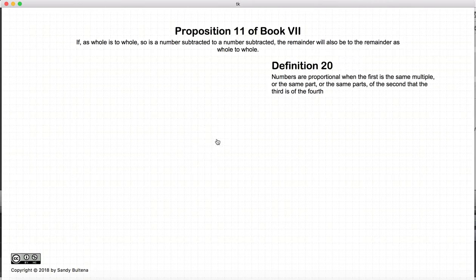Now before we begin, we need to recognize what the definition of proportional is. If you recall from Book 5, Euclid had a definition of proportional which dealt with magnitudes. However, Euclid treats numbers different than magnitudes, so he has a different definition of what it means to have numbers proportional.